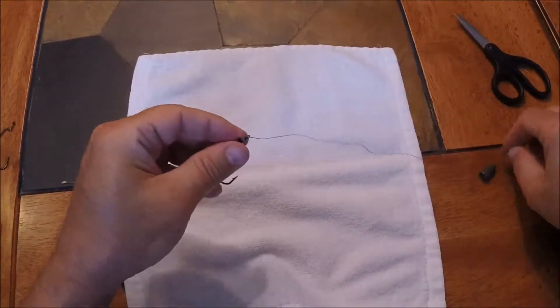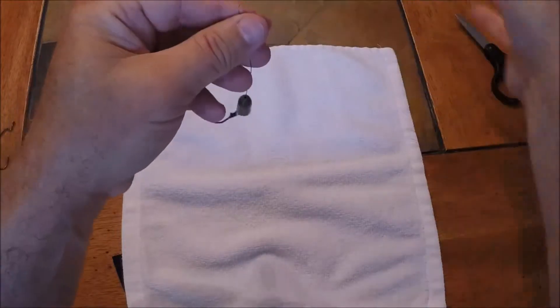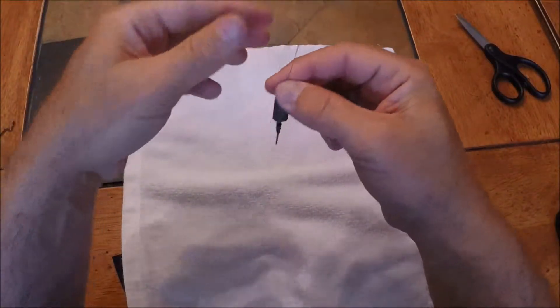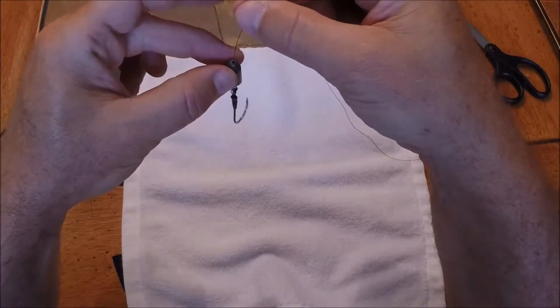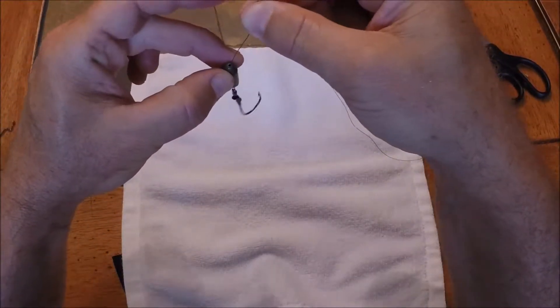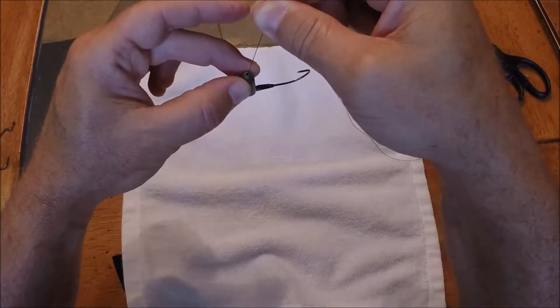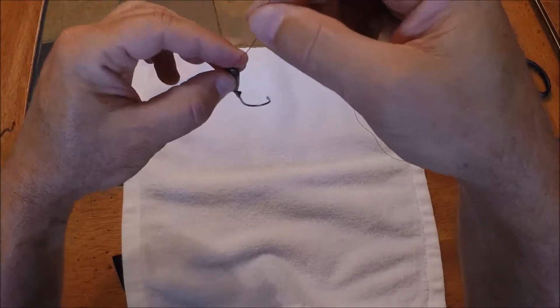And the reason why I use a snell knot for this and not a Palomar is right here. With a punching rig I've got a heavy weight that slides, or you peg it, but when you go to set the hook, this weight hitting the hook will catapult or lever that hook right into the roof of the fish's mouth. Just like so.